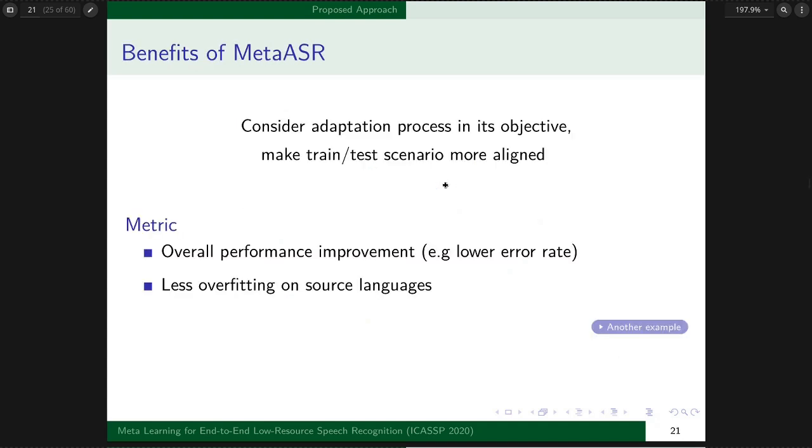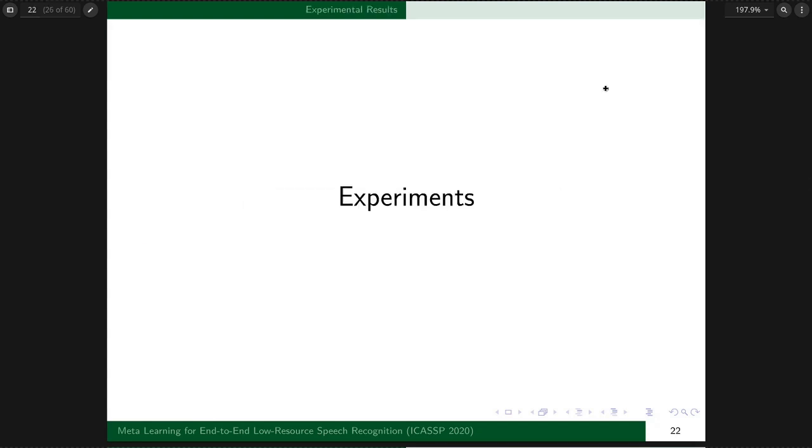Since meta-ASR considers the adaptation process in its objective, and our final goal is to adapt on the target language, meta-ASR makes the training and testing scenarios more aligned and might get better results than previous multi-task training methods. We use two metrics to evaluate benefits: overall performance improvement with lower error rates, and less overfitting on source languages.